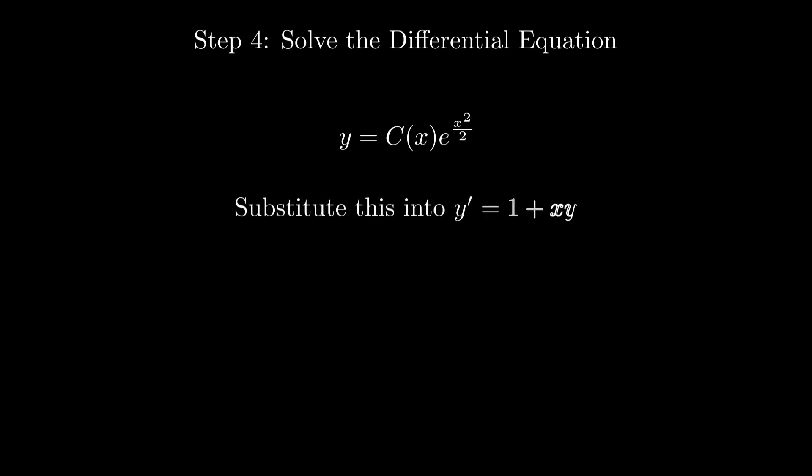Substituting this into our differential equation and simplifying, we get c prime of x times e to the x squared over 2 equals 1. Solving for c prime, we find it equals e to the negative x squared over 2. Integrating again gives c(x) equals the integral from 0 to x of e to the negative t squared over 2, dt.